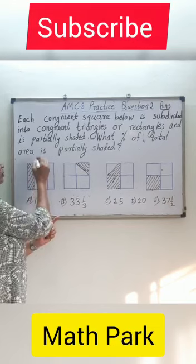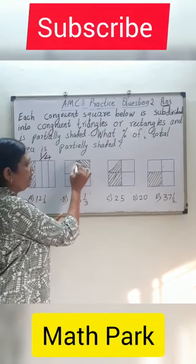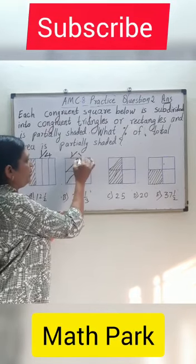So the first one, if I see the shaded portion, it is 1/4. For the second one, when we look at the triangle, it can be divided into 8 triangles. So the shaded portion here is 1/8.